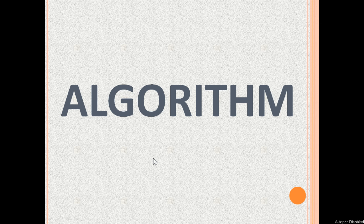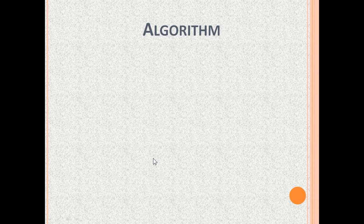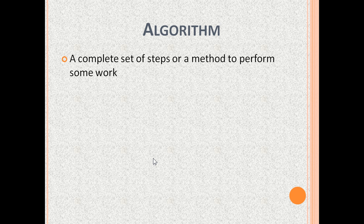Hello and welcome to this algorithm tutorial for beginners. In computer science, an algorithm is a complete set of steps or a method to perform some work. Human beings also use algorithms to complete tasks. You may have been using some algorithm to get dressed, another algorithm to get from A to B.